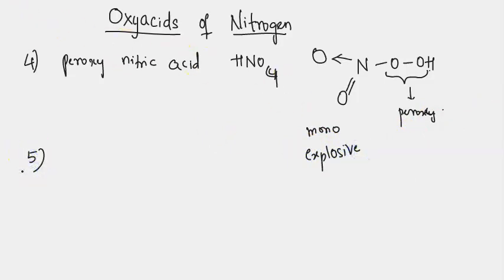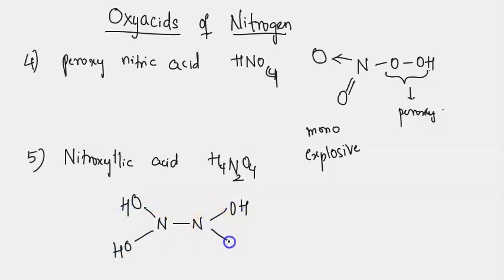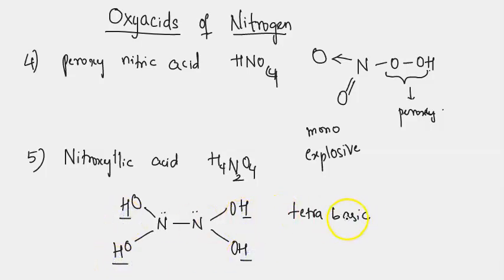The fifth and last oxy acid of nitrogen is nitroxilic acid with the formula H4N2O4. Its structure consists of two nitrogens connected by a single bond, with four OH groups attached — two on each nitrogen — and each nitrogen also has a lone pair. This compound is a tetrabasic acid because there are four hydrogens directly connected to four oxygens, all of which are replaceable. It is said to be the most unstable compound of nitrogen.